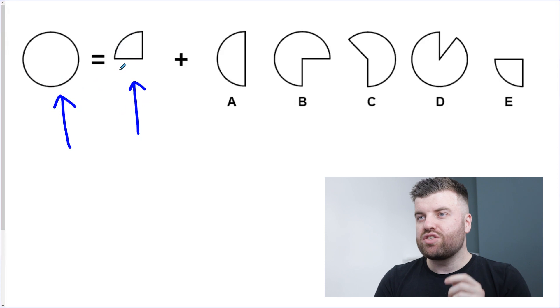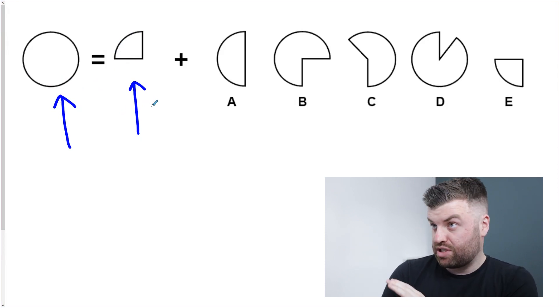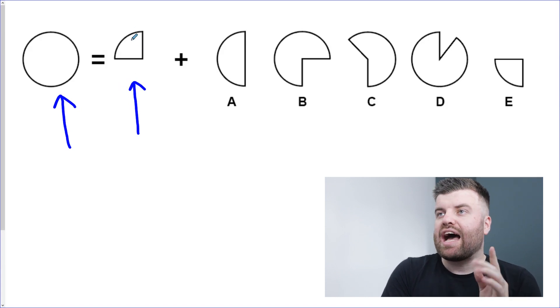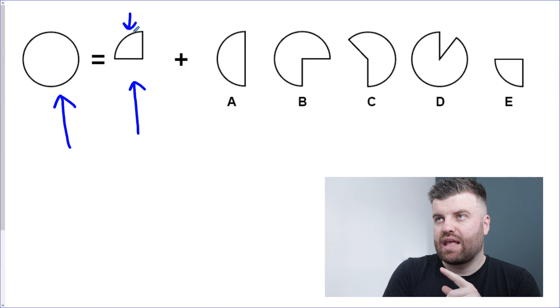If you can't see it straight away, which some of you might be able to already tell me the answer, but if you can't see it straight away, this is what you've got to do. This is the top tip: have a look at the smaller shape and try and draw that in on your original shape.